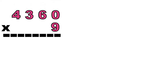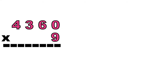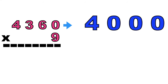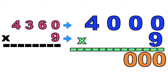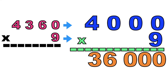Let's have our last example: 4,360 times 9. So 4,360 will become 4,000. As you can see, the second factor is only one digit. Take note: do not round off a one-digit number. So that means we're going to copy digit 9. How many zeros are we going to write? We're going to write three zeros. Then let's multiply the non-zero digits: 9 times 4 equals 36. So the estimated product of 4,360 and 9 is 36,000.